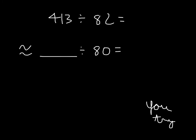So we have something divided by 80, and then we think about multiples of 80, 80, 160, 240, 320, 400, 480, and the closest is 400. So we'd have 400 divided by 80,